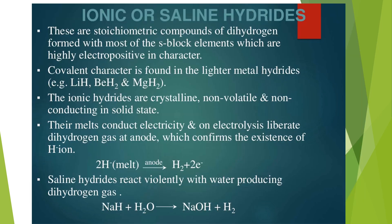Ionic or saline hydrides: These are stoichiometric compounds of hydrogen formed with most of the s-block elements which are highly electropositive in nature. Covalent character is found in lighter metal hydrides, for example lithium hydride, beryllium hydride, and magnesium hydride. The ionic hydrides are crystalline, non-volatile, and non-conducting in solid state. Their melts conduct electricity and on electrolysis liberate hydrogen gas at anode, confirming the existence of hydride ion. Saline hydrides react violently with water, producing hydrogen gas.